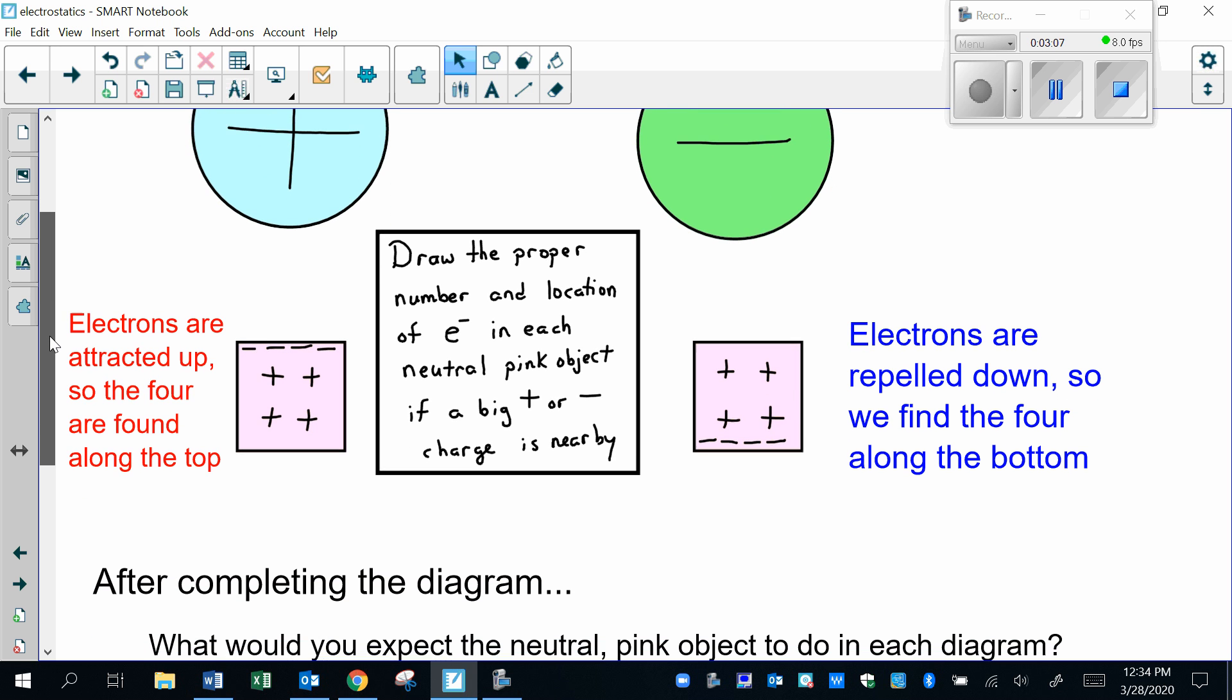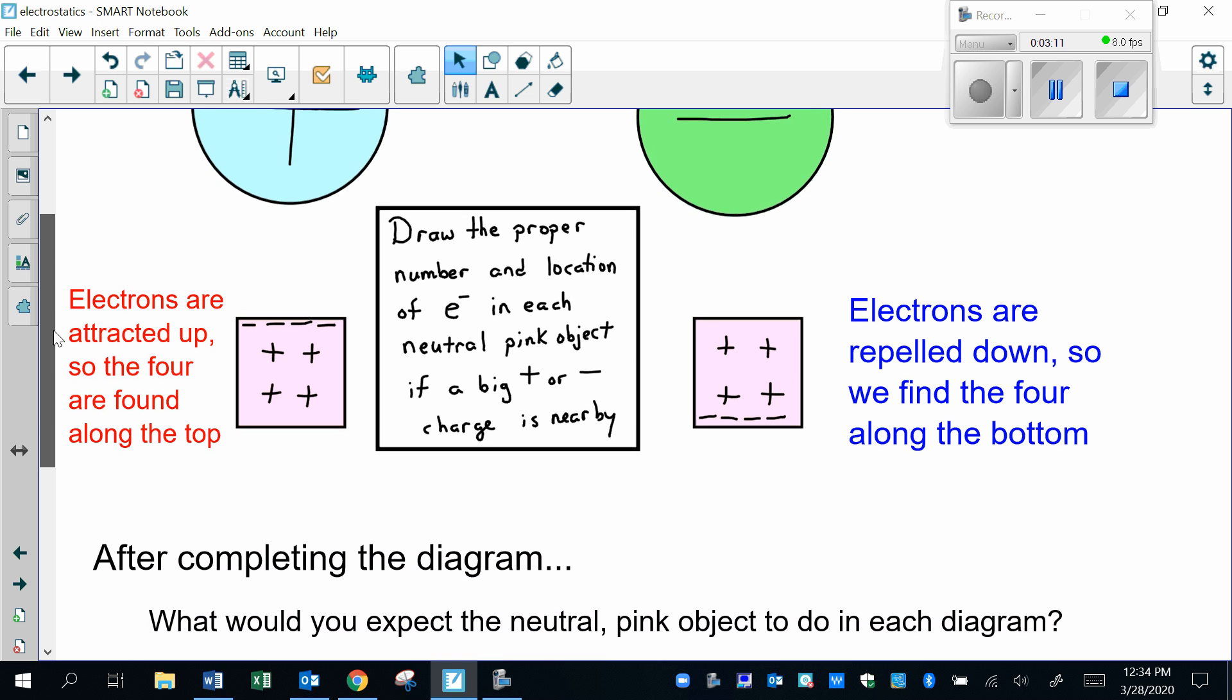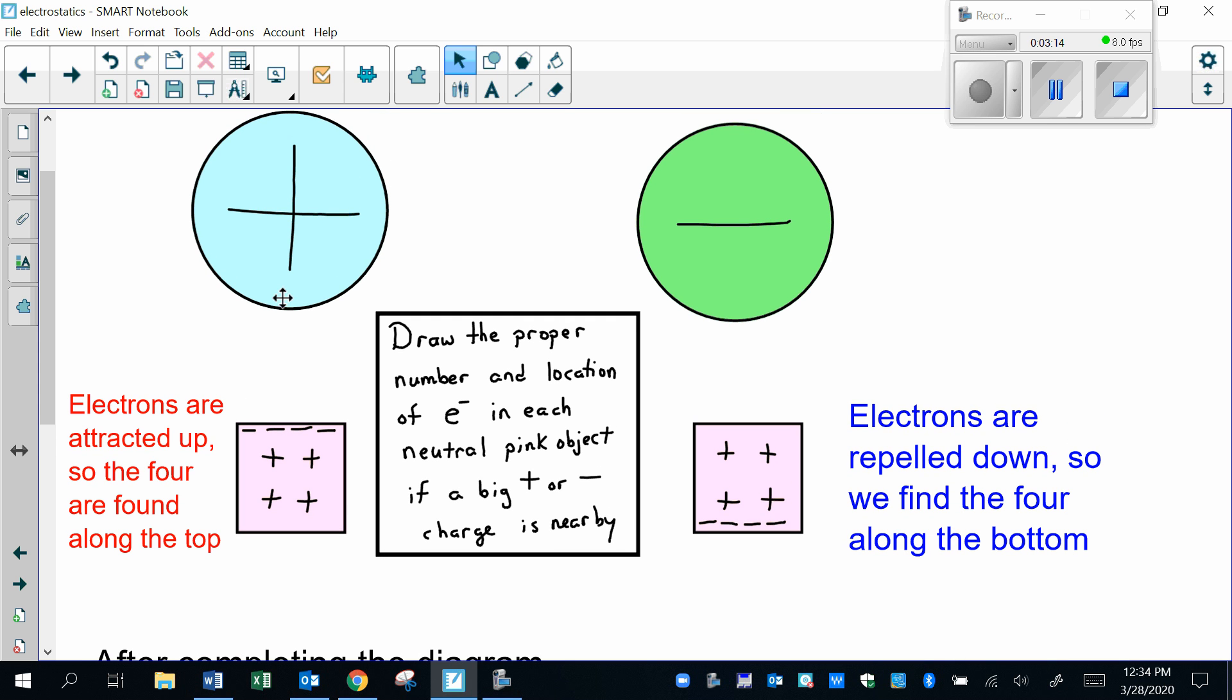After completing the diagram, what would you expect the neutral pink object to do in each diagram? I see that the negatives and positives here are really close together—they will attract. The positives here will repel, but they are farther away, and therefore the repulsion will be a little bit weaker.